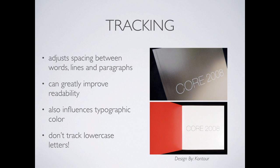Tracking is a lot like kerning except it deals with words, lines, and paragraphs — the big picture. Tracking adjusts spacing between words, lines, and paragraphs. Remember I said not to use extended font or increase font size to make your paper longer? Here it is. You can spread out the words proportionally and consistently to make the paper seem a little bit longer — or compress it because you wrote too much. It also influences typographic color: make the text more dense and it gets darker; extend it out and it becomes lighter. You don't track between lowercase letters — this is overall paragraph style.